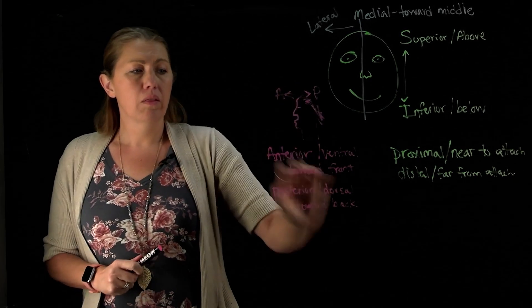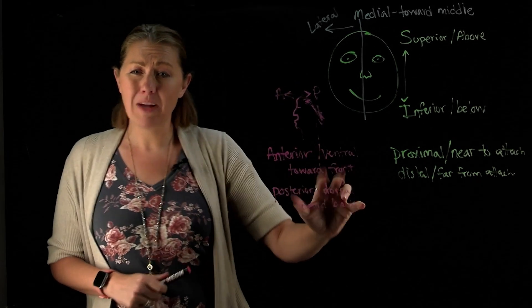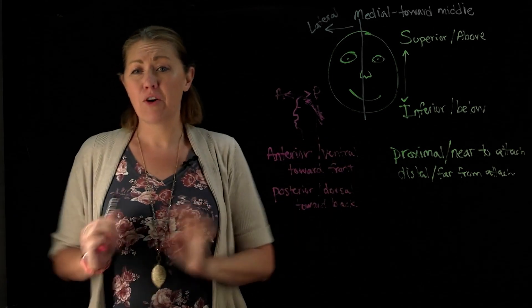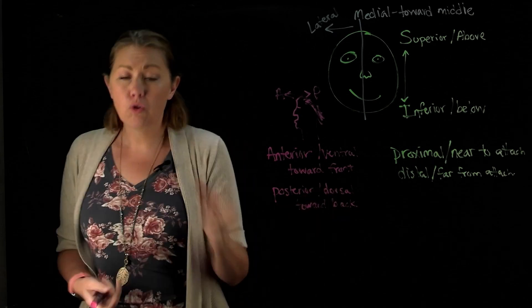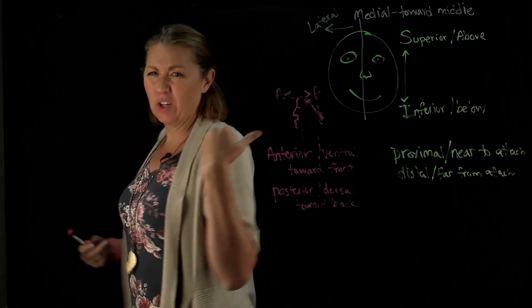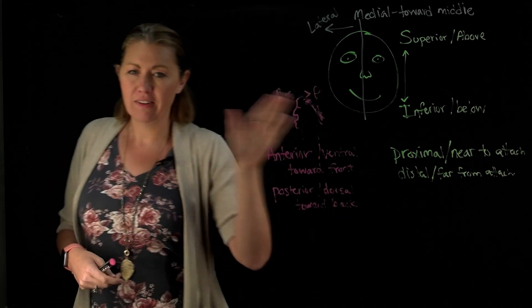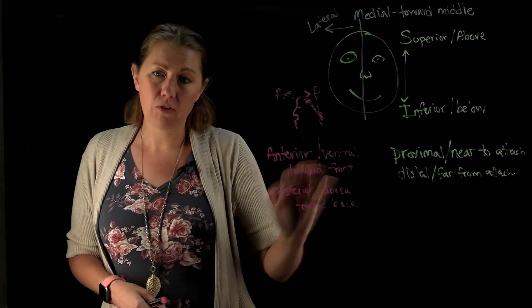When you're looking at this term ventral, you don't use it as much. But the trick I use is I think the vents are in the front of my car. And then when you're looking at this term dorsal, the dorsal fin on a shark, the one that, you know, like in Jaws, when you hear the dun dun, that's called a dorsal fin. So you're looking towards the back there.